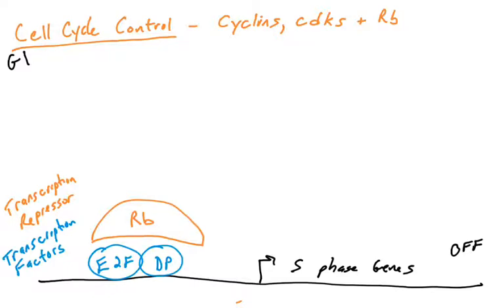So these S phase genes are off because the RB transcriptional repressor binds to the transcription factors, preventing them from activating gene transcription. We'll see how the genes get turned on later in this video. So that's one set of players: the transcriptional repressor RB protein, and transcription factors E2F and DP1.